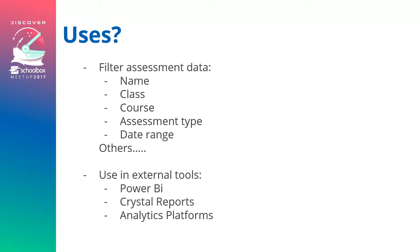You can also filter by assessment type — within Schoolbox you define types such as oral and exams — and map just your common assessment tasks to get only the results you want. A big benefit is this allows you to use external tools such as Power BI, Crystal Reports, and other analytics platforms, which are ever-growing. That was a basic overview of the Schoolbox database and just the assessments area — but you have access to far more data than you probably need and can trim it down to get exactly what you want.